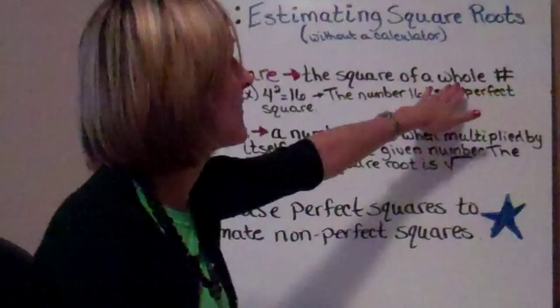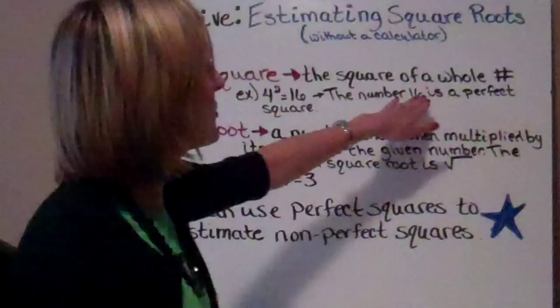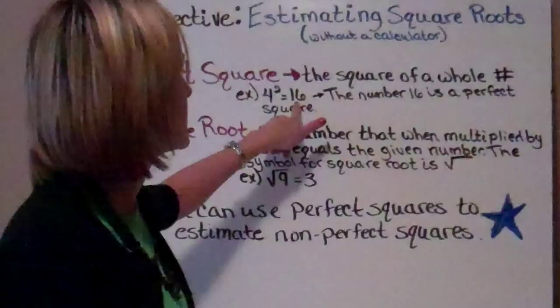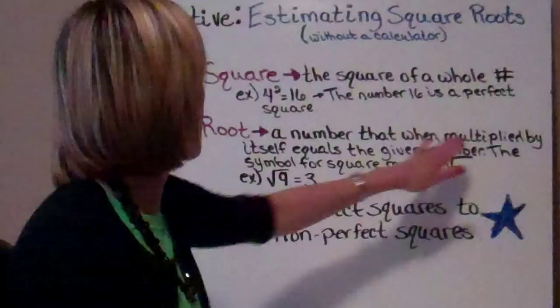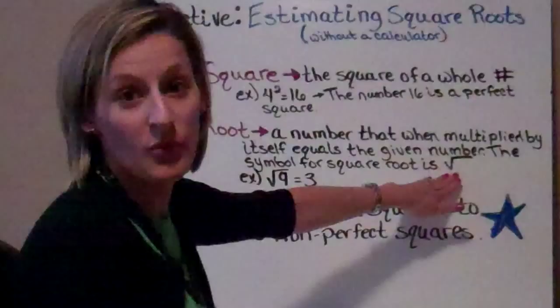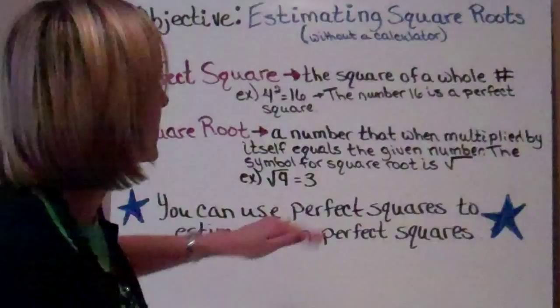The first one is a perfect square. A perfect square is a square of a whole number. The number 16 is a perfect square because 4 squared, which 4 is a whole number, is 16. A square root is a number that when multiplied by itself equals a given number, and we use the symbol of the radical. So the square root of 9 equals 3, so 3 is your root.